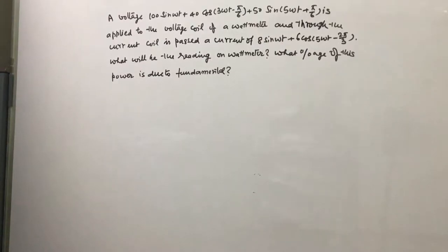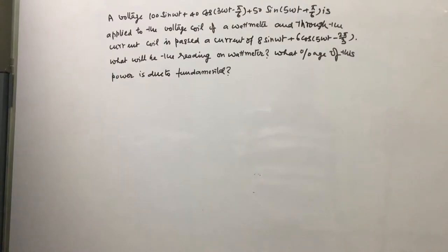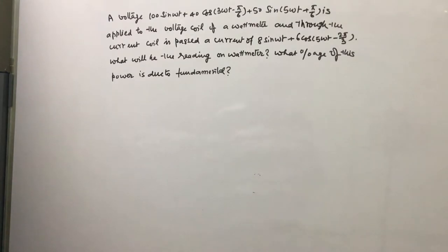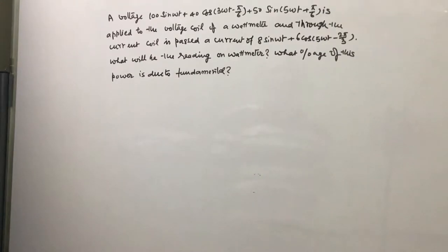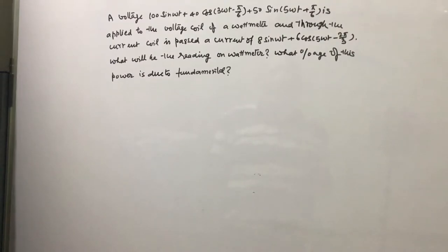Welcome to my channel. Today we will solve one problem related to power measurement. A voltage 100 sin(ωt) + 40 cos(3ωt − 5π/6) + 50 sin(5ωt + 5π/6) is applied to the voltage coil of a wattmeter, and through the current coil is passed a current of 8 sin(ωt) + 6 cos(5ωt − 2π/3). What is the reading on the wattmeter, and what percentage of this power is due to the fundamental?